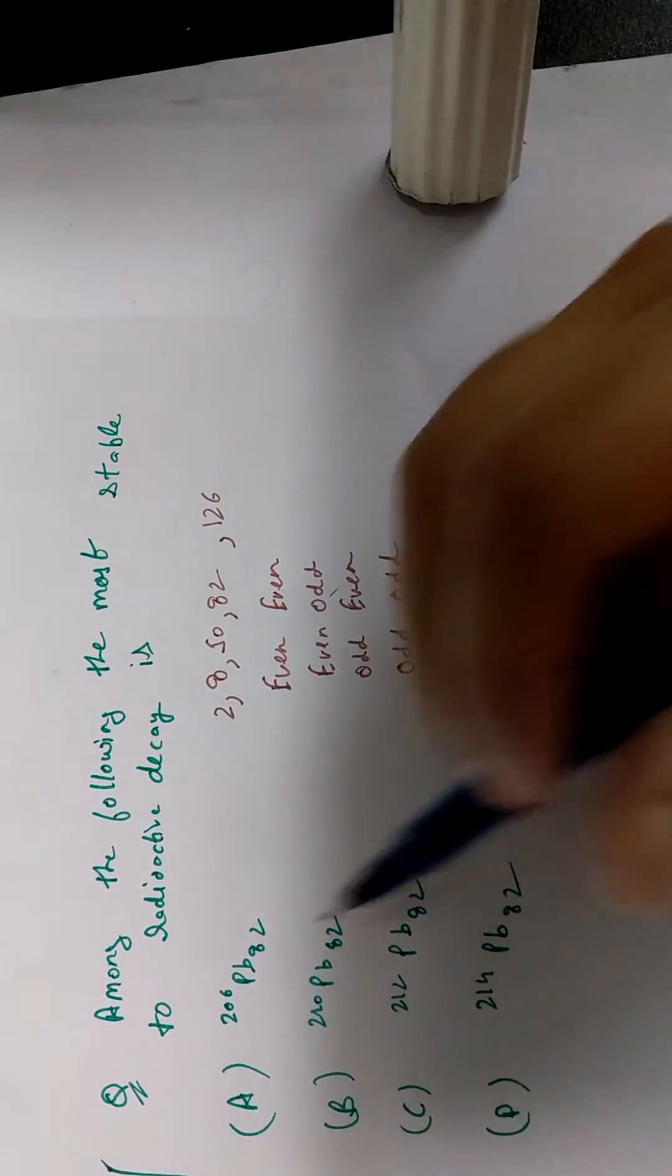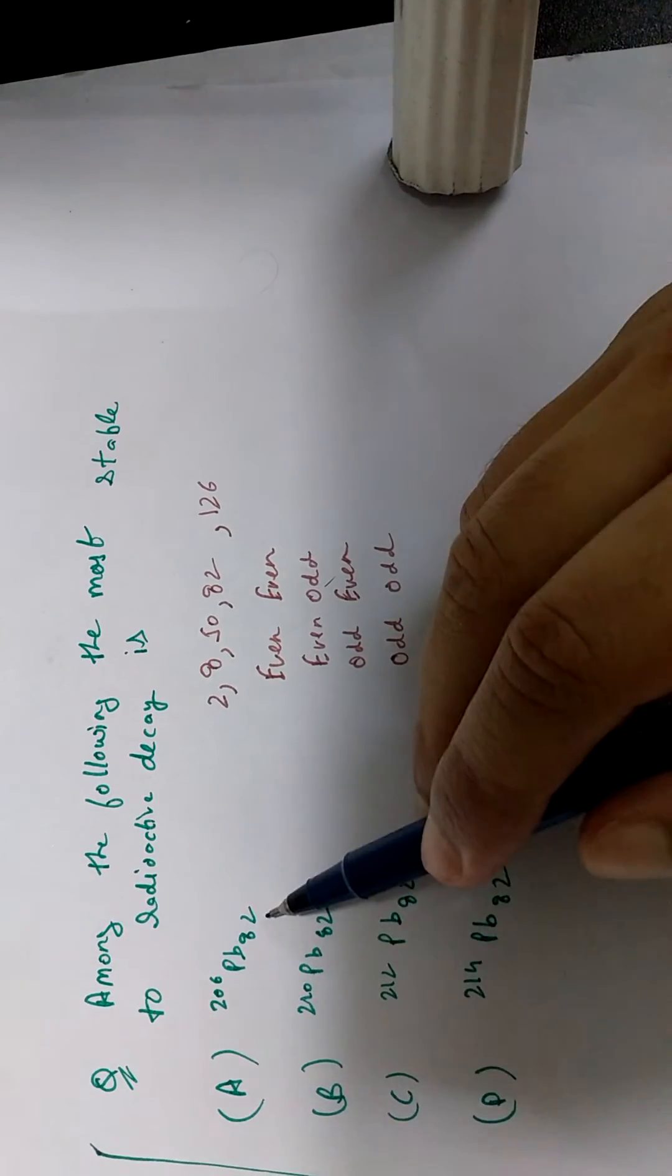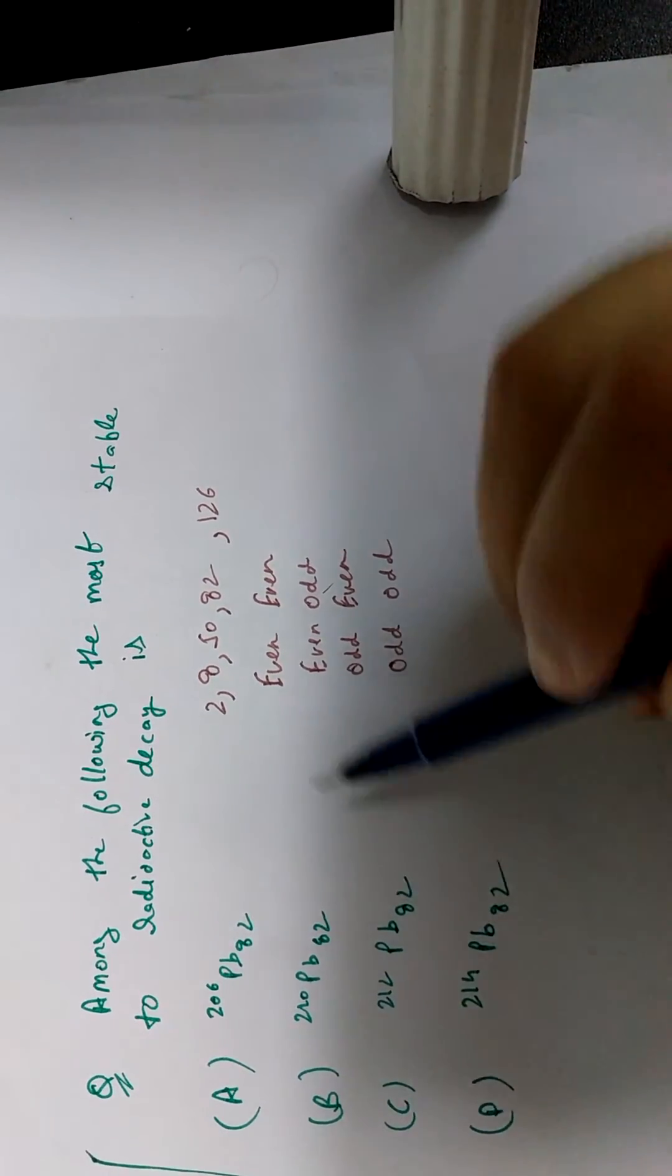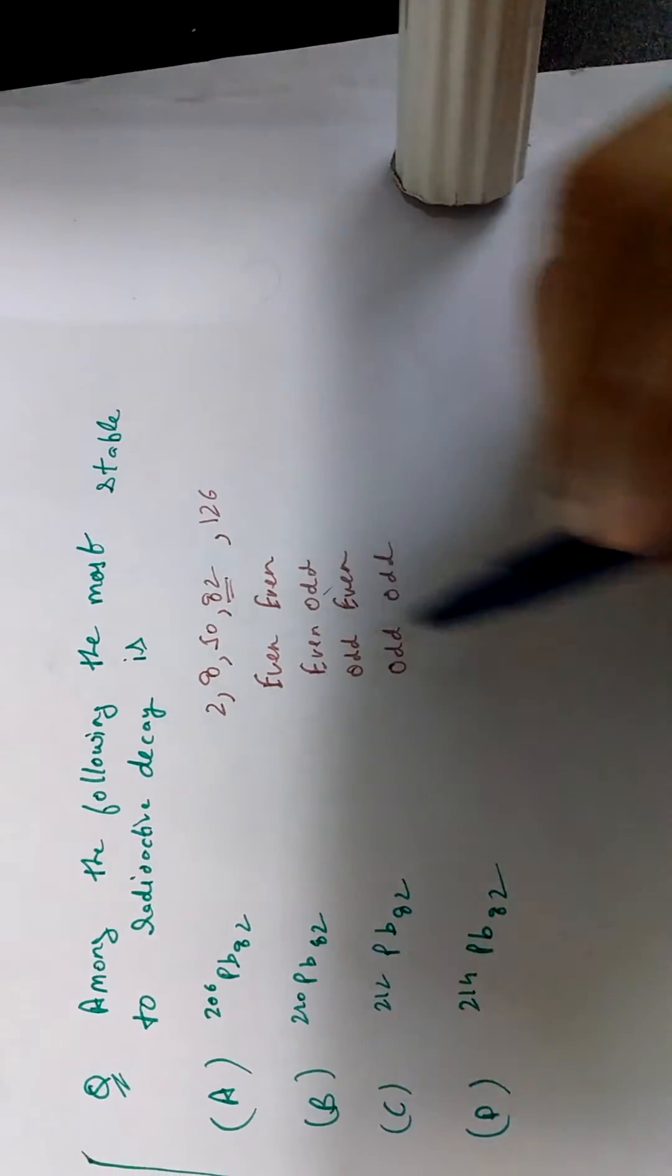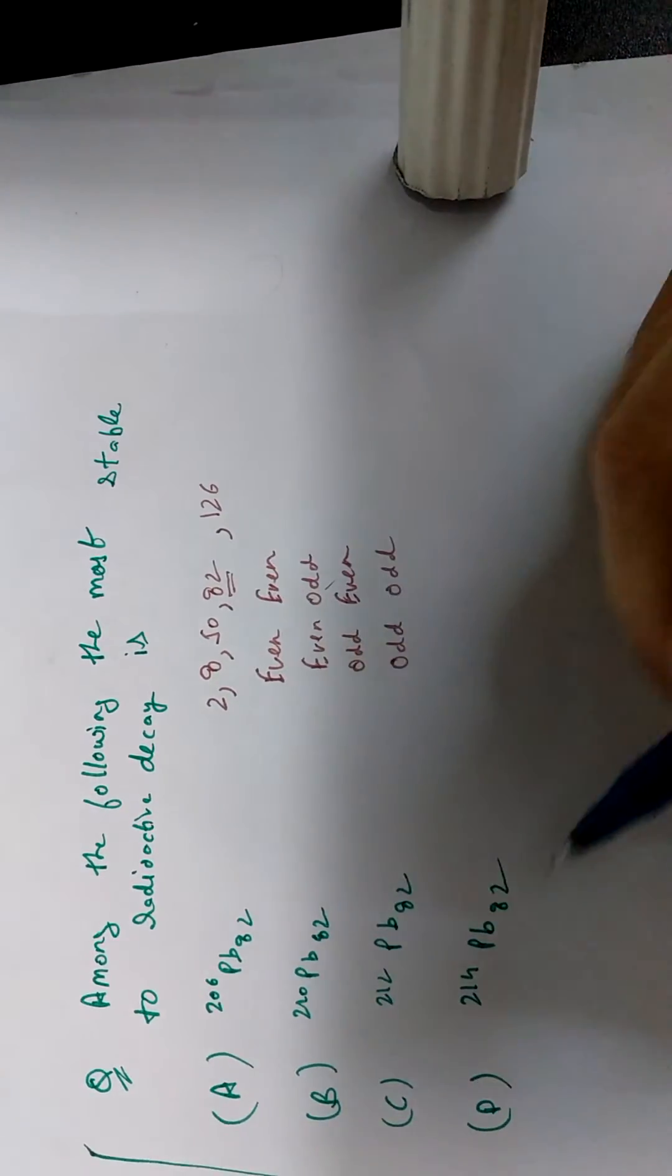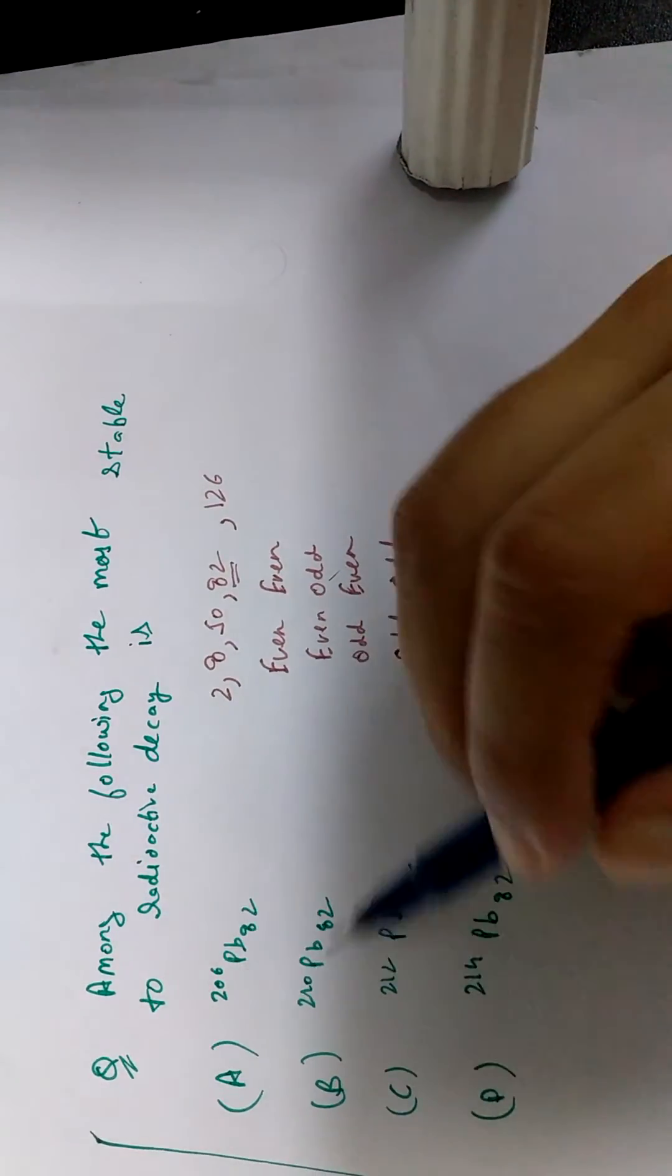Now coming on to the question, as you can see, the number of protons in all of these elements is 82, which is exactly the magic number that I was talking about. So this means that all of them are equally stable. Now we need to look at the number of neutrons.